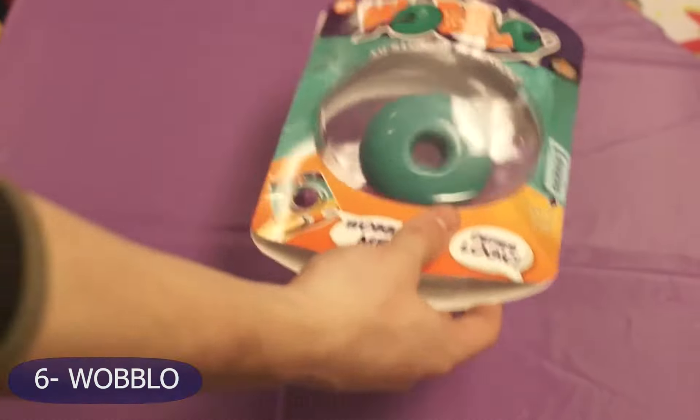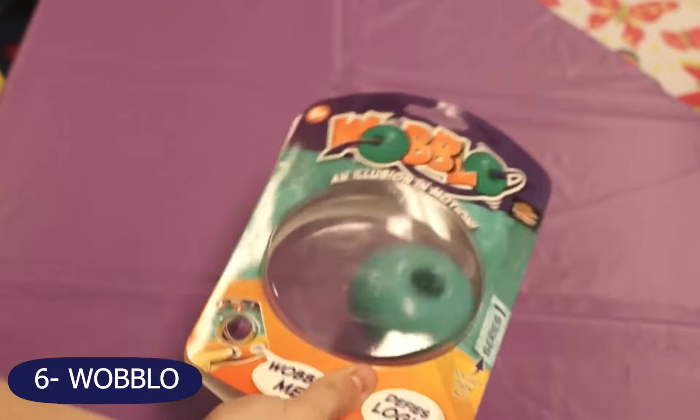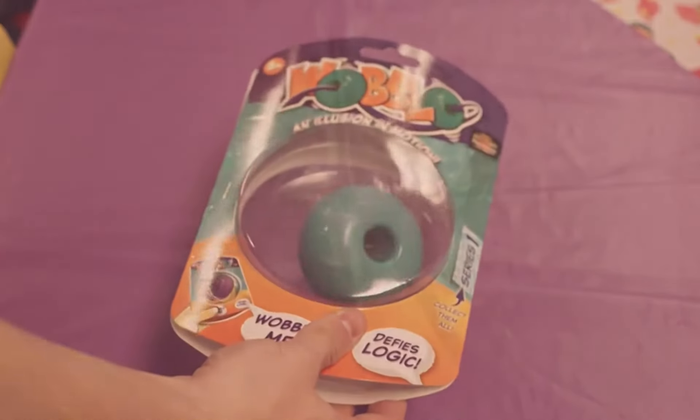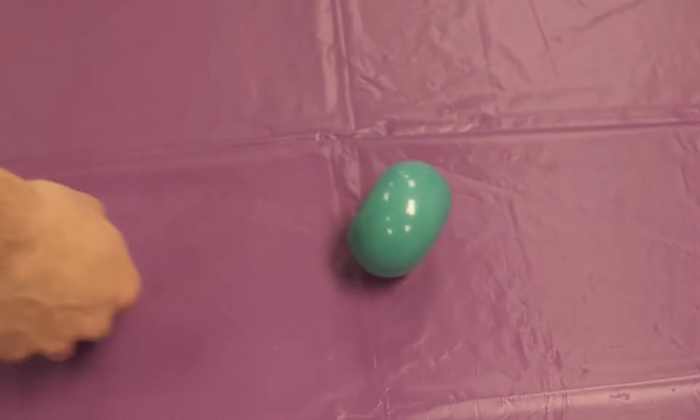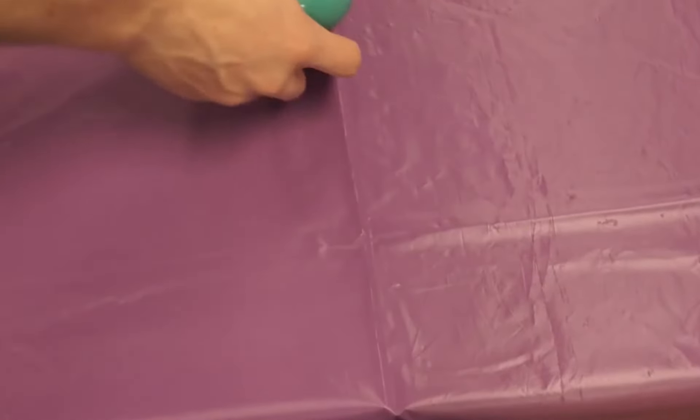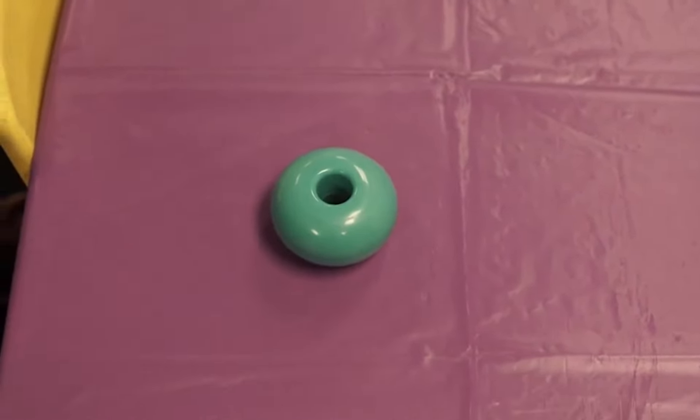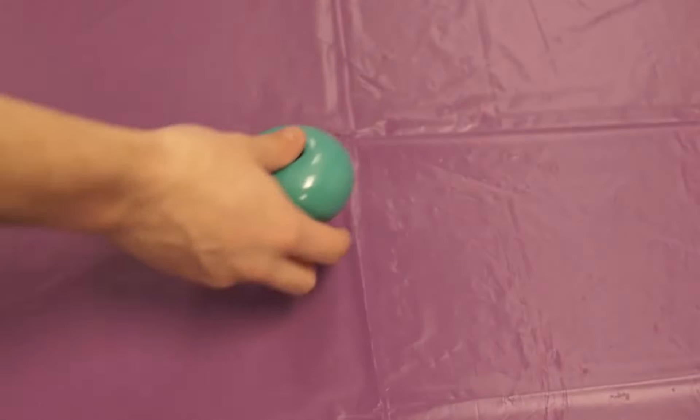Number 6, the Woblo. This singular toy defies the laws of physics. At first sight, it looks like a doughnut but this casing contains a weighted ball of metal, the source of all the patterns of movement.